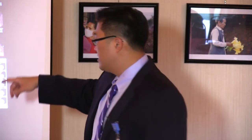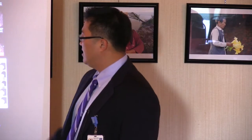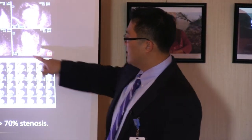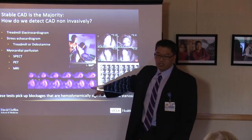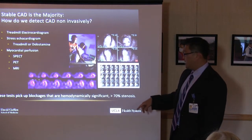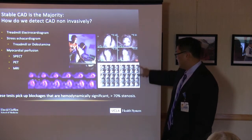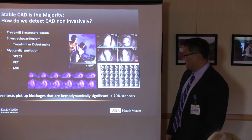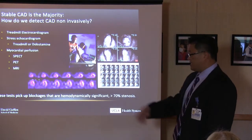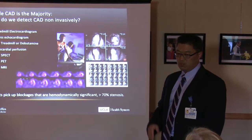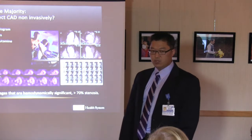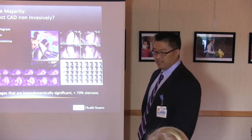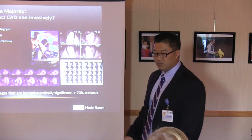Here are a few pictures: a gentleman doing a treadmill EKG, an echocardiogram looking at the different walls of the heart, a myocardial perfusion scan assessing blood flow between rest and stress, and a cardiac MRI. These tests are designed to pick up severe blockages — those greater than 70% narrowed. These tests can be pretty accurate for that degree of blockage, but blockages that are not severe are often missed.